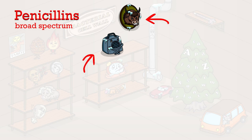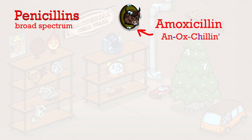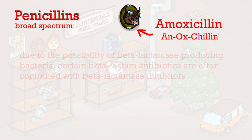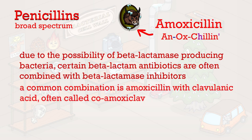There are two broad spectrum penicillins in this picture, which act on both gram-positive and gram-negative bacterial groups. Amp-chillin represents ampicillin, and an ox-chillin represents amoxicillin. Due to the possibility of beta-lactamase producing bacteria, certain beta-lactam antibiotics are often combined with beta-lactamase inhibitors. A common combination is amoxicillin with clavulanic acid, often called co-amoxiclav.